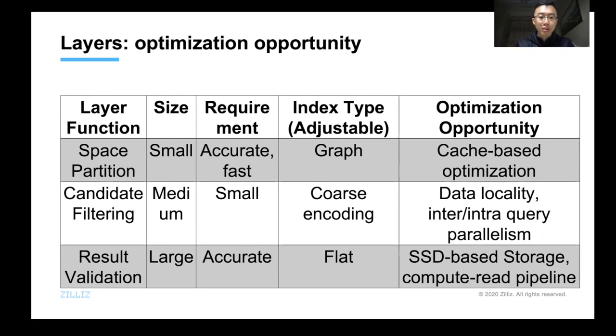In the space partition layer, the data size is small. Typically, for tens of millions of vectors, there will be around tens of thousands of regions, but it needs to be accurate to avoid missing any related region. In this case, graph-based index is suitable, and we can apply cache-based optimization or heterogeneous hardware to speed up searching.